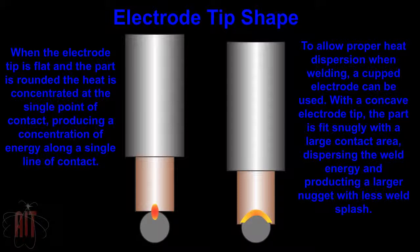When the electrode tip is flat and the part is rounded, the heat is concentrated at the single point of contact, producing a concentration of energy along a single line of contact. To allow proper heat dispersion when welding, a cupped electrode can be used. With a concave electrode, the part fits snugly with a large contact area, dispersing the weld energy and producing a larger nugget with less weld splash.